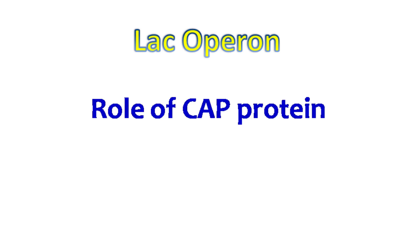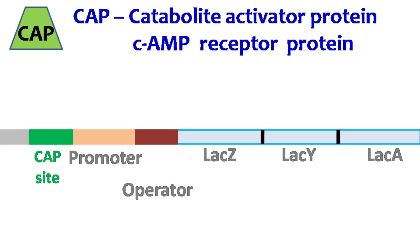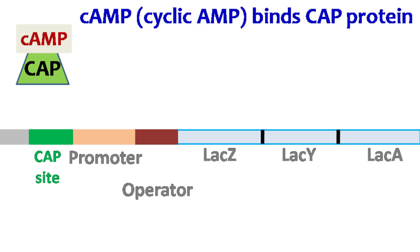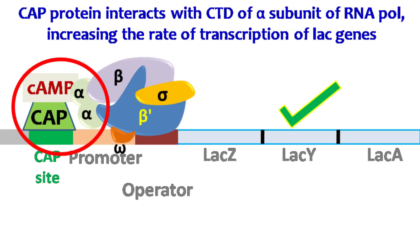The role of CAP protein in the lac operon: CAP stands for catabolite activated protein. CAP binds cAMP, hence it is also known as cAMP receptor protein. When glucose levels in the cell decrease, the level of cyclic AMP increases. The cAMP binds and activates the CAP protein. The cAMP-CAP complex then binds to the CAP site and interacts with the C-terminal domain of the alpha subunit of RNA polymerase, which increases the rate of transcription of the lac genes.